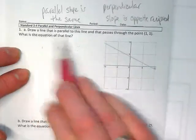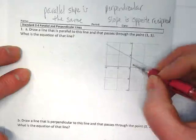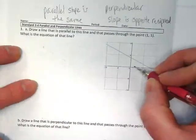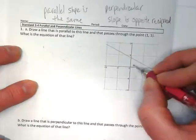So I'm going to be asked to draw a line that's parallel to this line and that passes through the point 1 comma 1. So that's going to be right, I'm going right 1 and up 1.